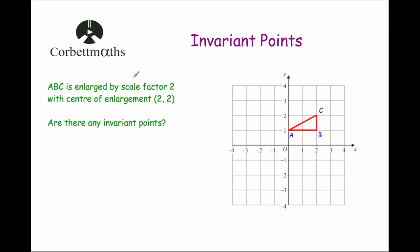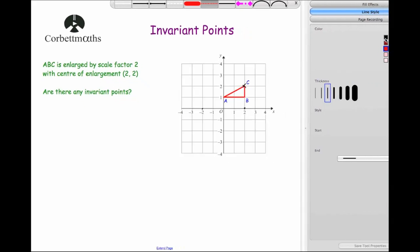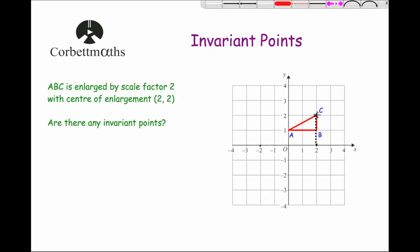Next question: ABC is enlarged by scale factor 2 with centre of enlargement (2, 2). So all the points will become twice as far away from that centre of enlargement. The point C will stay where it is, because it's no distance away from the centre and double zero is still zero. But all other points will move twice as far away — B moves, and A moves four to the left and two down. So yes, there is an invariant point and it's the point C.